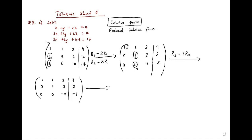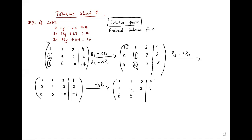To get the echelon form, we say row 3 multiplied by negative 1 over 2, row 3. So we get: 1, 1, 2, 4; 0, 1, 2, 2; 0, 0, 1, 1/2.